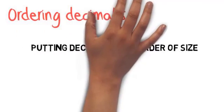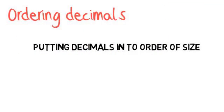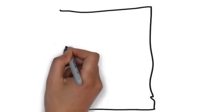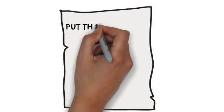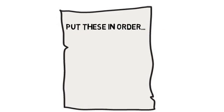Ordering decimals. Ordering decimals basically means putting decimals in order of size. In an exam question you may be given a group of numbers of decimals, and be asked to put them in order of smallest to largest or vice versa.